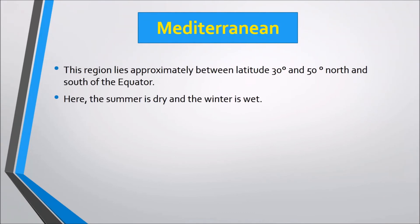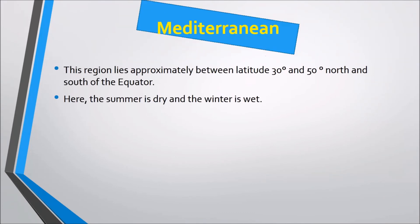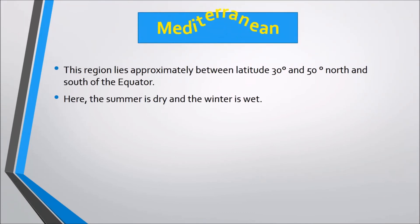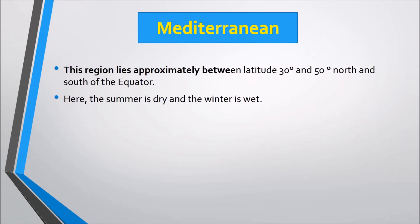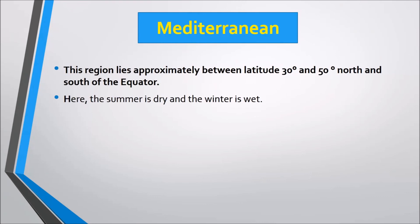Next is the Mediterranean region, which lies approximately between latitudes 30° and 50° north and south of the equator. Here summers are dry and winters are wet.